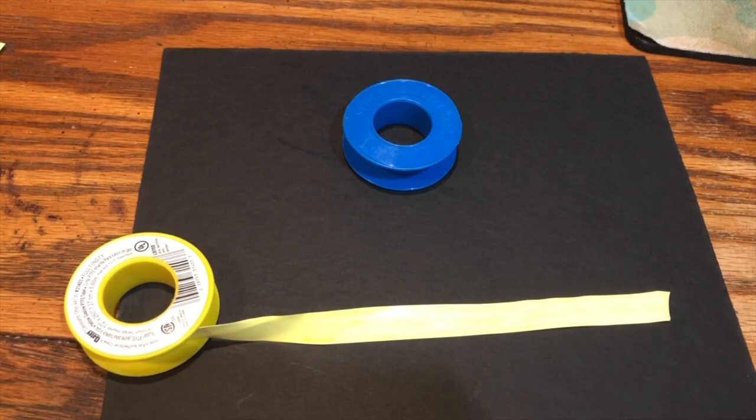There are multiple types of Teflon tape. Here I have the yellow tape, which is used for gas. And I also have white tape that is used for water pipes.